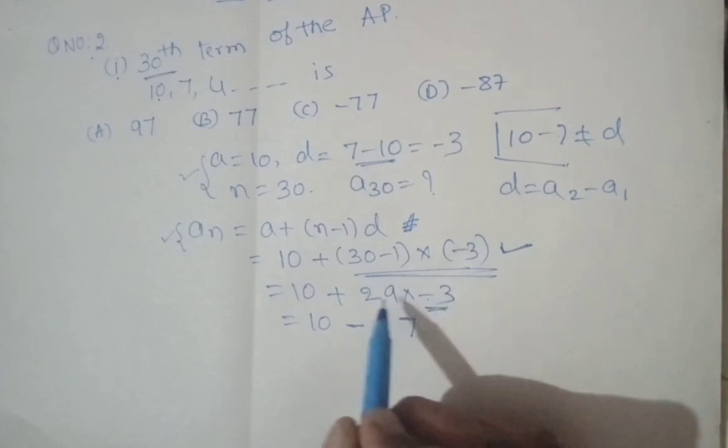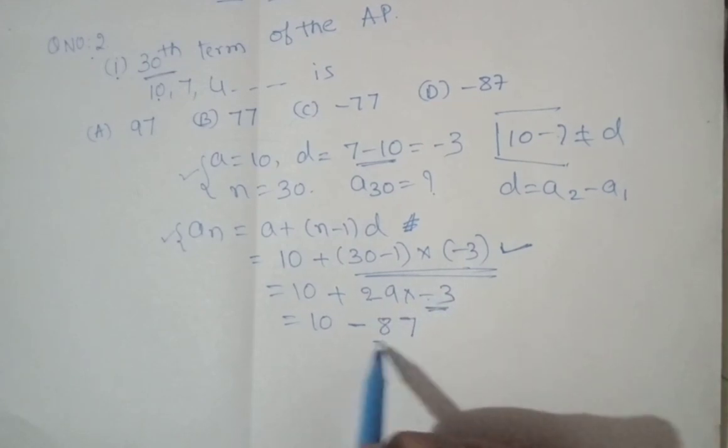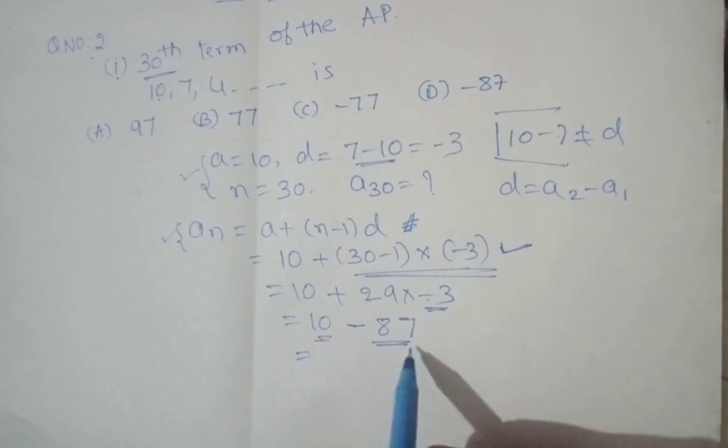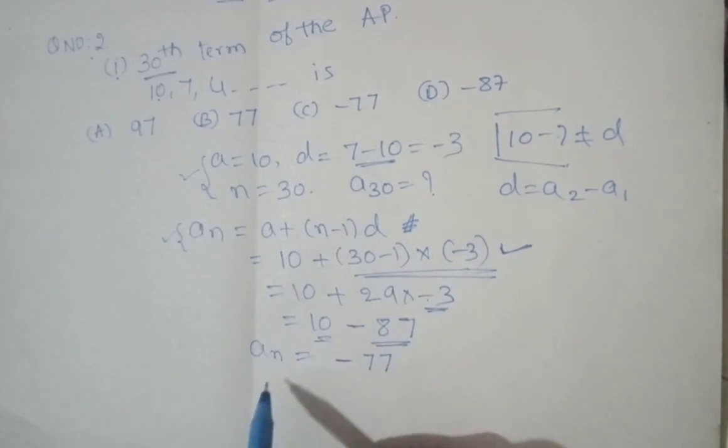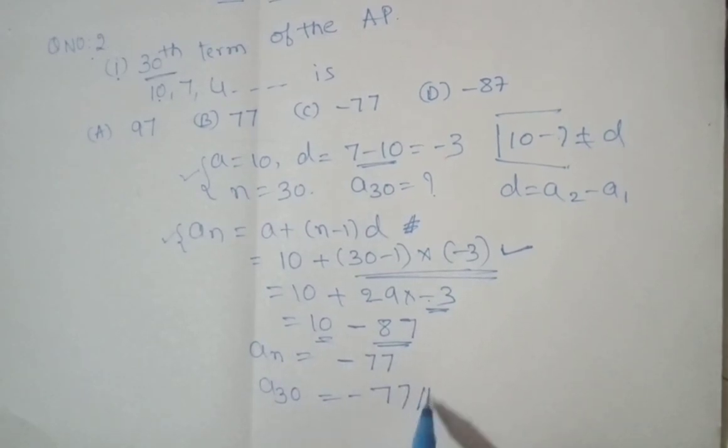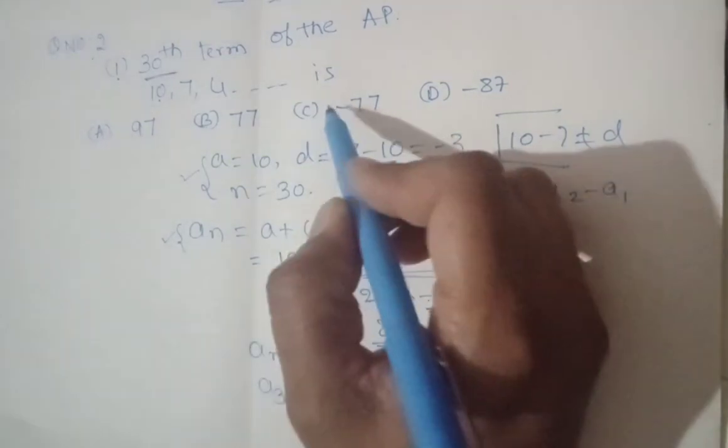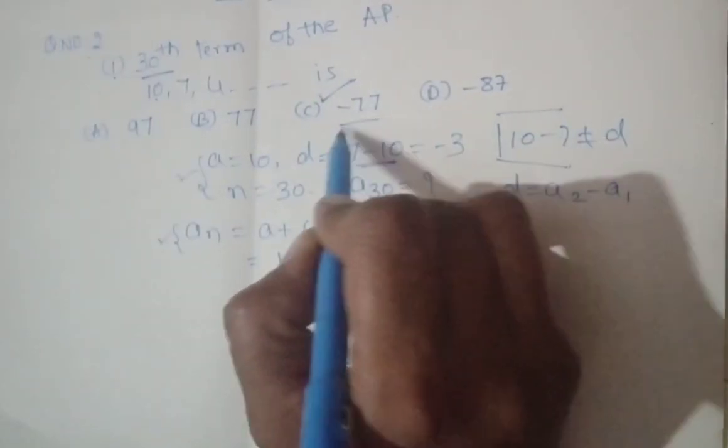So 10 minus 87 is minus 77. What is that? a_n, the number a_30 equals minus 77. You have got it. Now the correct option is C. That is, C is the correct answer.